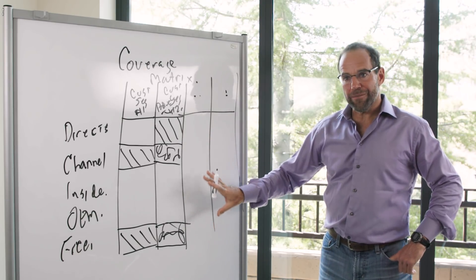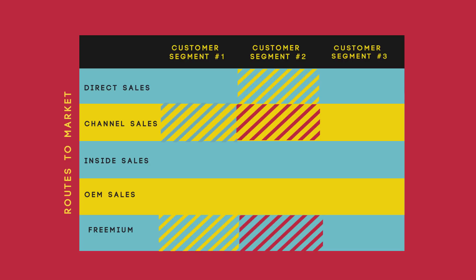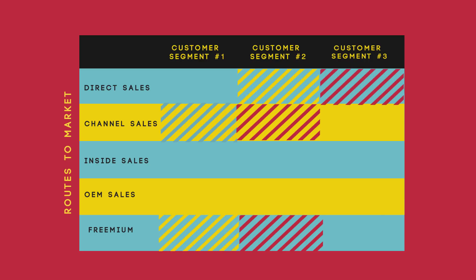Map it out. Be very deliberate about these pieces. Ask yourself: does a direct model really work there? Based on the product — no, it doesn't work there. Maybe here it's channel, and maybe we're going to do inside over here, and we're not going to do direct here.